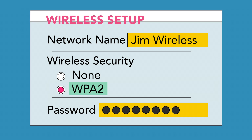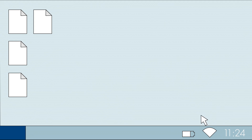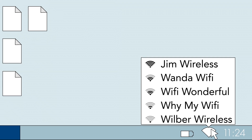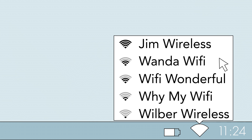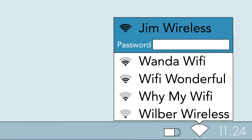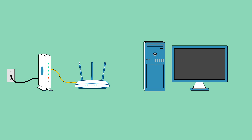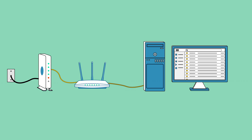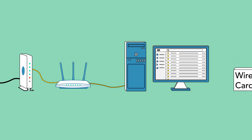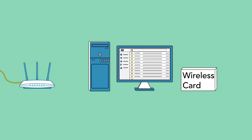After you've set up your wireless network, go into each device's Wi-Fi or network settings, select your network name, and type your password. If any of your devices are not wireless ready, you can simply plug them into your router with an ethernet cable, or you can purchase a wireless card.